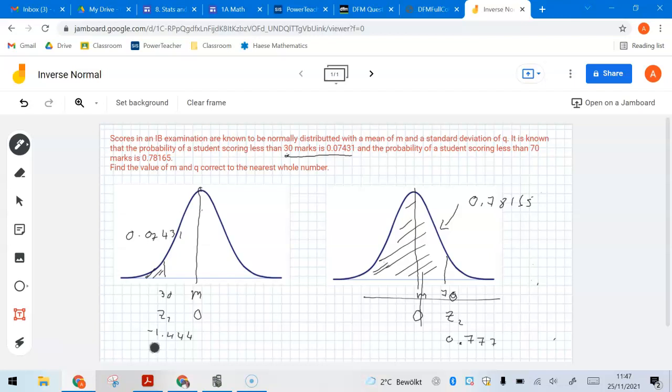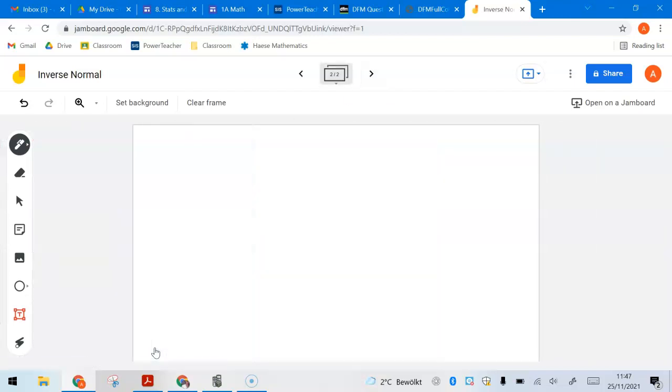Now, with these, I'm going to set up two simultaneous equations. And basically, I get that from this formula. And the formula is x take away mu. And that's the thing I'm trying to find out. Divided by the standard deviation, it gives me a Z value.